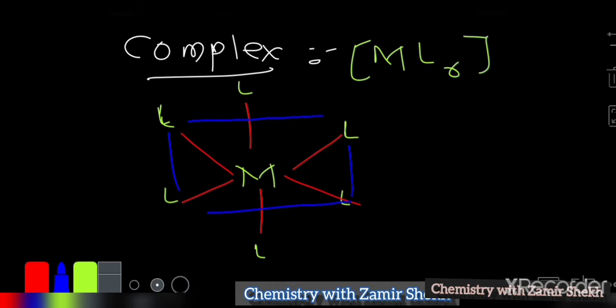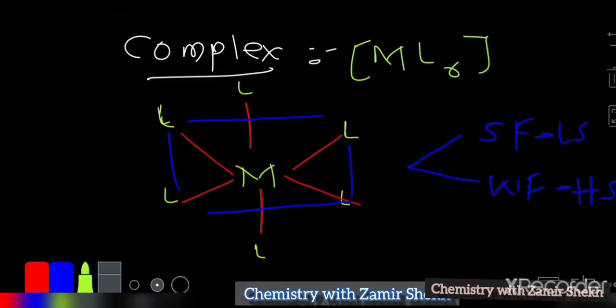Ligands are of two types based on their nature: strong field ligands and weak field ligands. Based on that, we have two types of complexes — high spin and low spin. Strong field ligands always form low spin complexes, and weak field ligands form high spin complexes. In low spin, electrons are in a paired position; in high spin, more electrons remain unpaired.